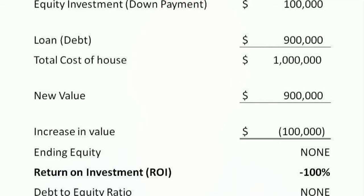But financial leverage is a double-edged sword. It's great when property or companies are increasing in value, but leaves little margin when they decrease in value. If the value of the house dropped below $900,000, the owner's equity would be wiped out and the bank would be left holding the bag. This is why lenders don't like to see large debt to equity ratios.